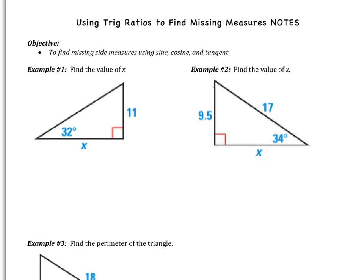Looking at example one, it says find the value of x. Looking at the angle that we have, angle 32, and then our two sides. In regards to 32, side 11 is the opposite side because it's across. Here's my hypotenuse, and then here's my adjacent.